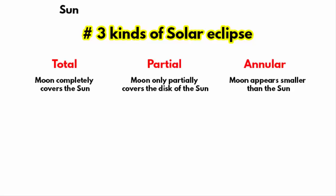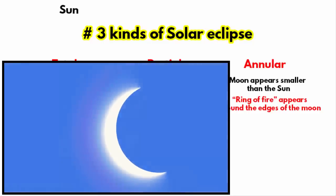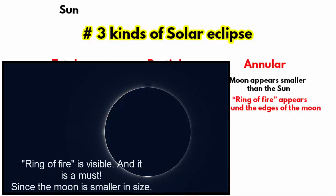Annular solar eclipse occurs when the moon appears smaller than the sun, as it passes centrally across the solar disk and a bright ring or annulus of sunlight remains visible during the eclipse.